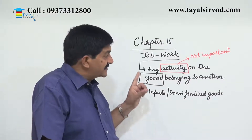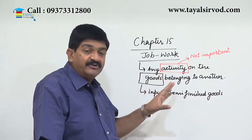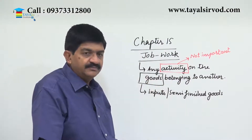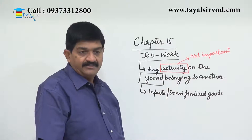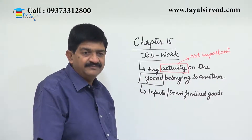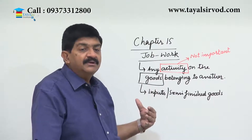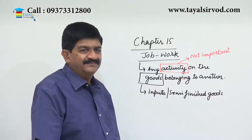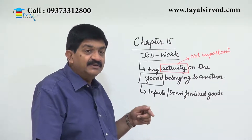What is important is that this is some activity — the activity may or may not have the effect of manufacture — performed on goods. These goods may be inputs or semi-finished goods, and the goods belong to another person, meaning the job worker will never have ownership of these goods. If you refer to Schedule II, job work is treated as a service.